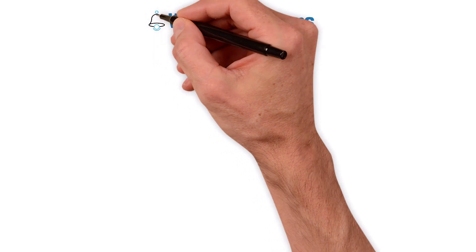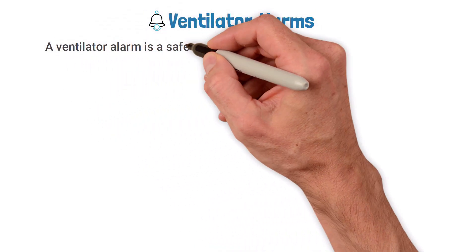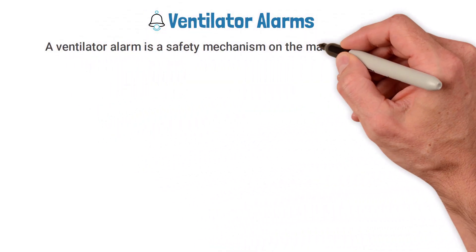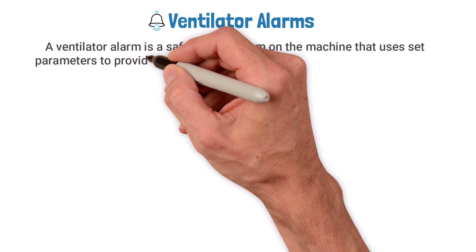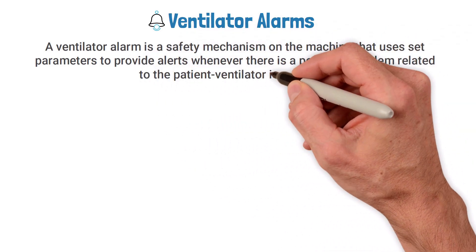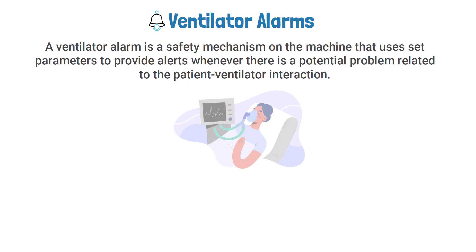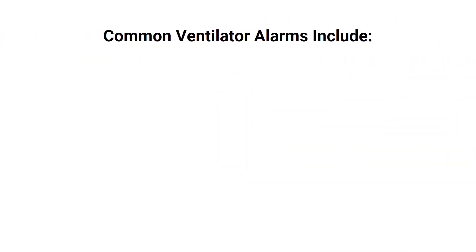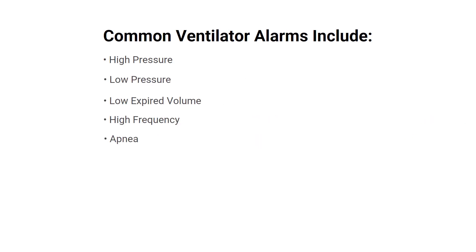The last setting we need to discuss is the ventilator alarms. A ventilator alarm is a safety mechanism on the machine that uses set parameters to provide alerts whenever there is a potential problem related to the patient-ventilator interaction. Some of the common ventilator alarms include high pressure, low pressure, low expired volume, high frequency, apnea, high PEEP, and low PEEP.